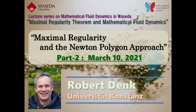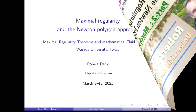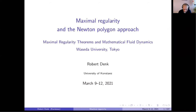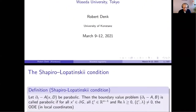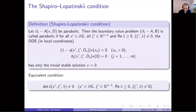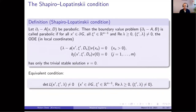The last speaker is Professor Robert Denk from University of Constance. He is continuing his talk about machine reliability and the Newton polygon approaches. Welcome everybody to my second talk. Good evening to the Japanese people. Before I continue, I will repeat the last thing I told you yesterday: the Shapiro-Lopatinskii condition. In the program I started with the idea of maximal regularity, and I have shown that maximal regularity is connected with Fourier multipliers and R-boundedness.